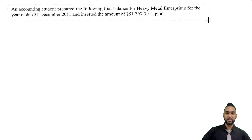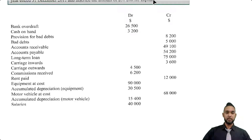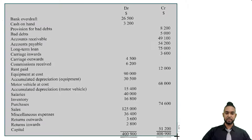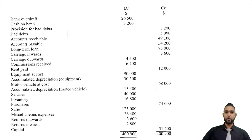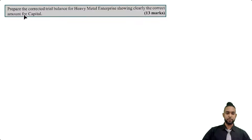As per usual we'll take a read of the information. It says an accounting student prepared the following trial balance for Heavy Metal Enterprises with the year ended 31st December 2011, and inserted the amount of $51,200 for capital. They've given us an entire trial balance. Long story short it's wrong — there are quite a few items in the wrong column. The question requires us to prepare the corrected trial balance for Heavy Metal Enterprises, showing clearly the correct amount for capital.